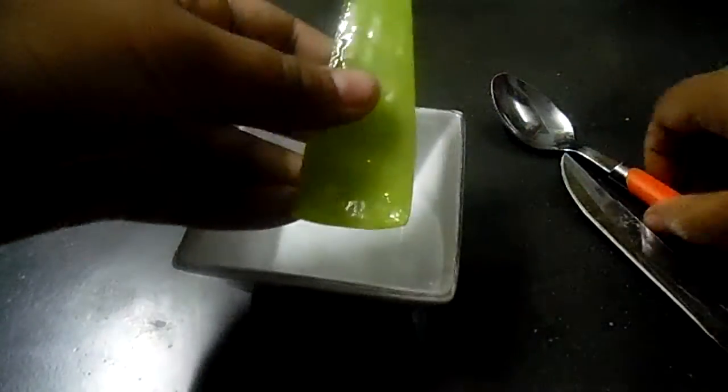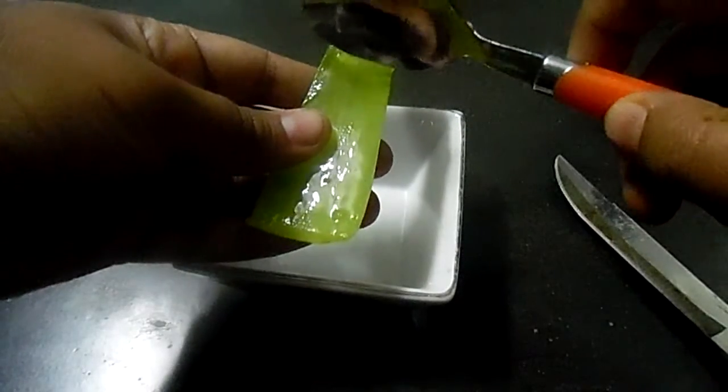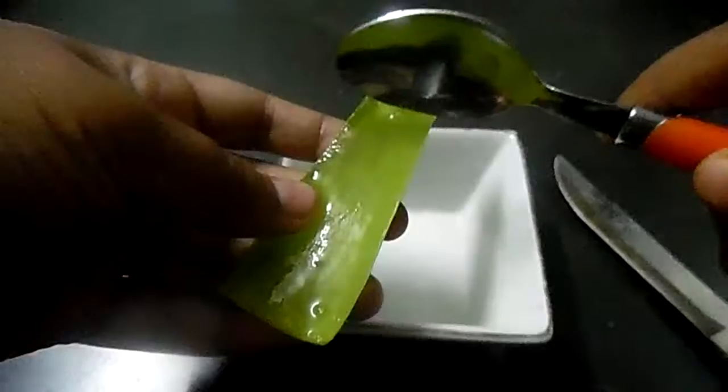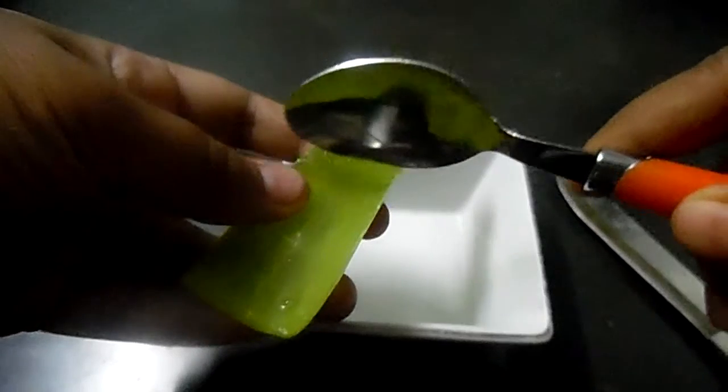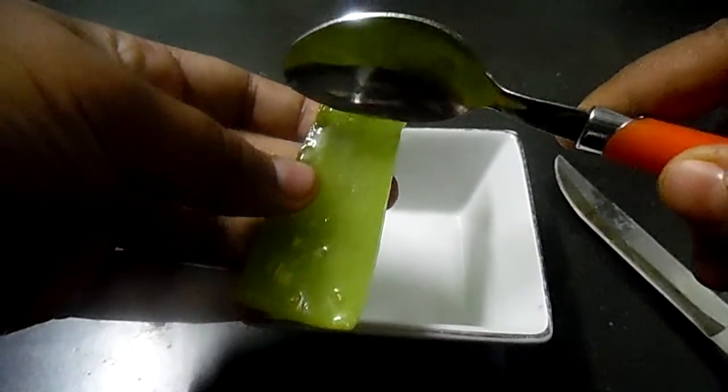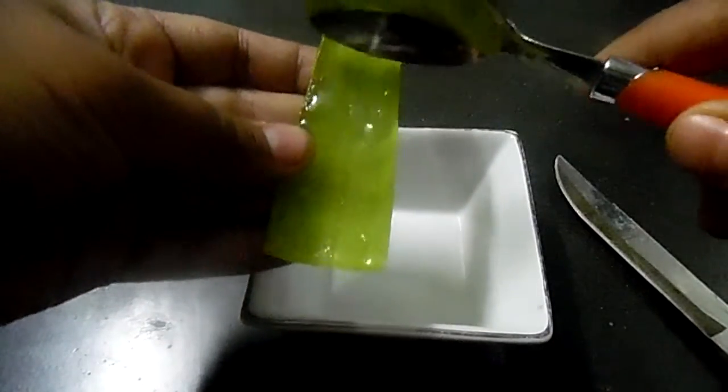Now you can use the spoon for taking out the aloe vera gel. With this spoon you can scoop out the aloe vera gel slowly.